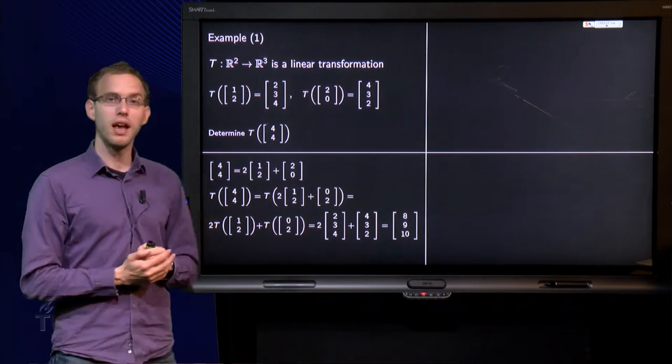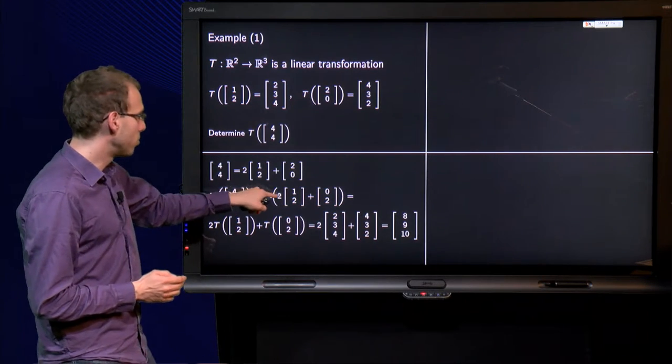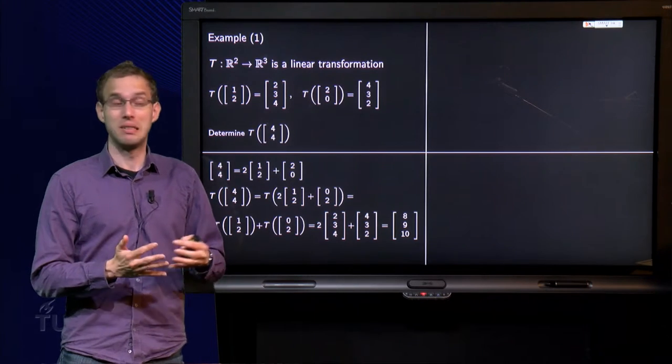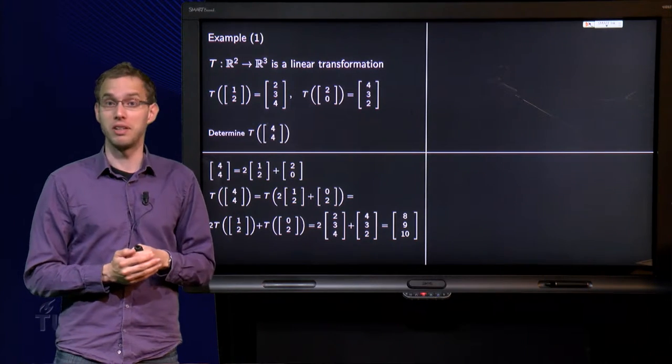Well, the image of (4,4) equals the image of 2 times (1,2) plus (2,0). Okay, fair enough. But then I still haven't gotten any further.